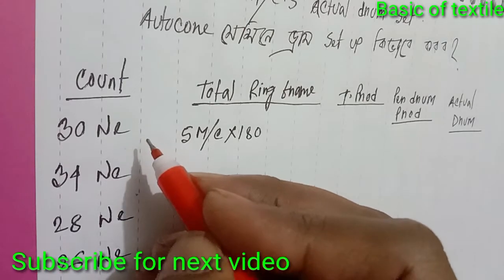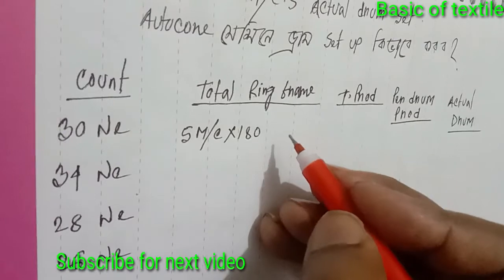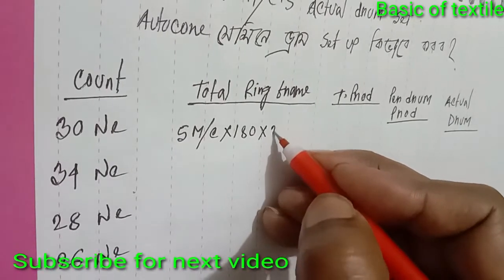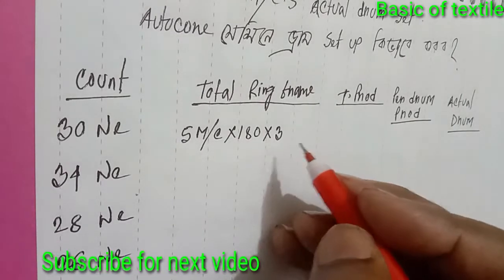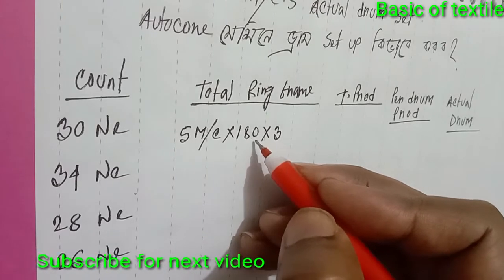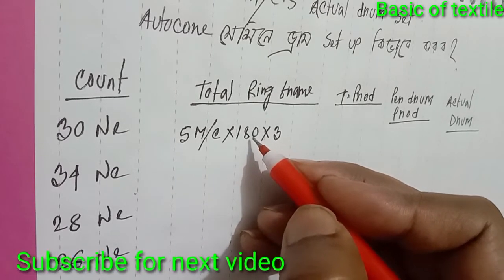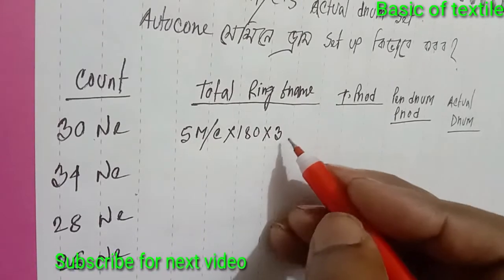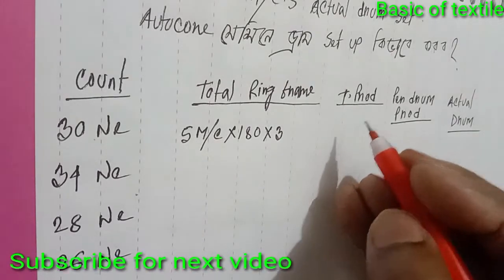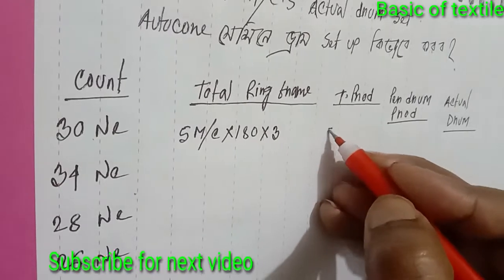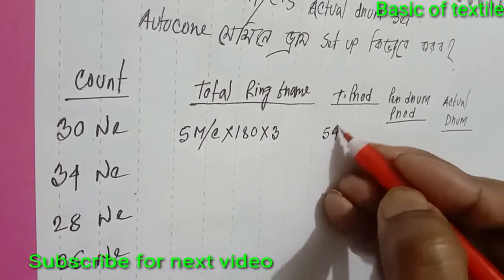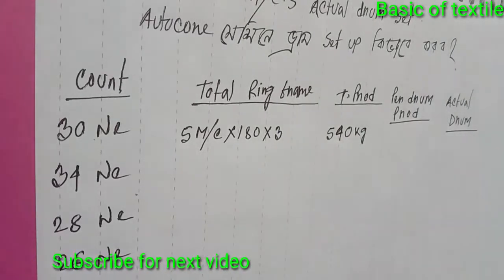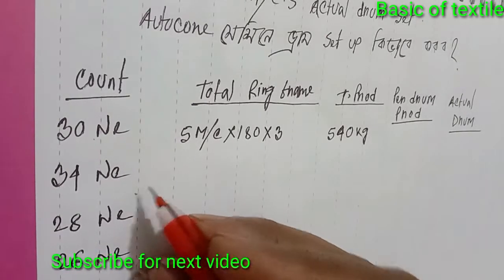Suppose a ring machine — just wait 24 hours. Over 24 hours you can see the army with 3 shifts: 180 per shift per machine, 30 count, 3 shifts — that means 24 hours. So production will be 540 kg.